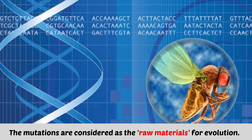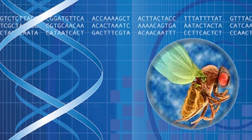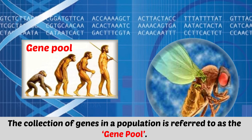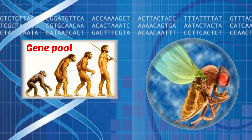The mutations are considered as the raw materials for evolution. They help to create and provide variations in a population along with genetic recombinations. The collection of genes in a population is referred to as the gene pool. Mutations enrich the gene pool with new modified genes. A large scale accumulation of such genes will lead to evolutionary modifications.